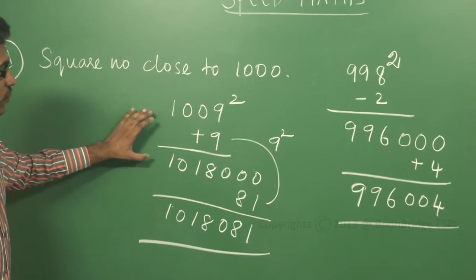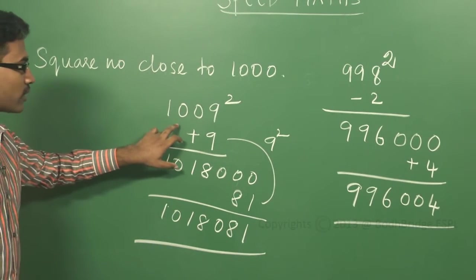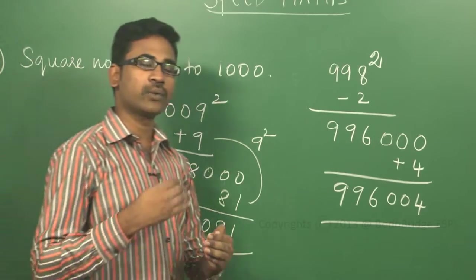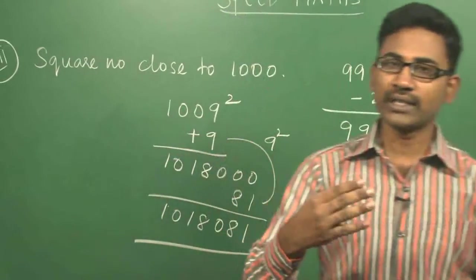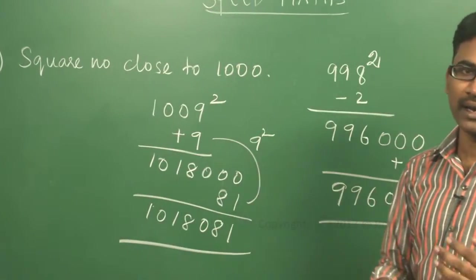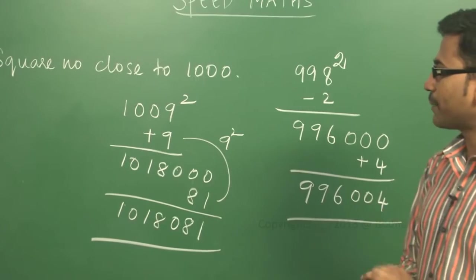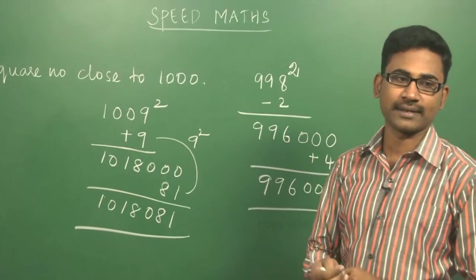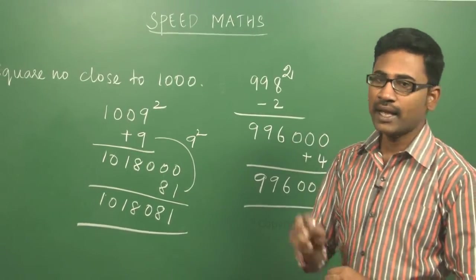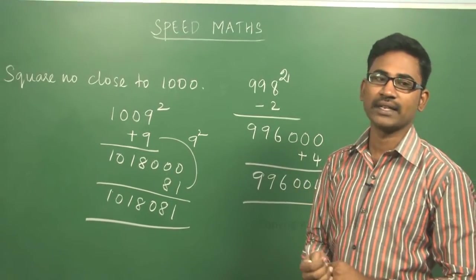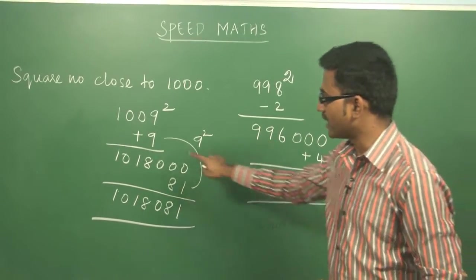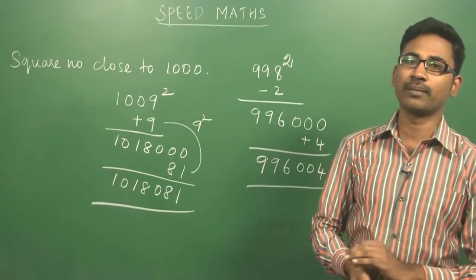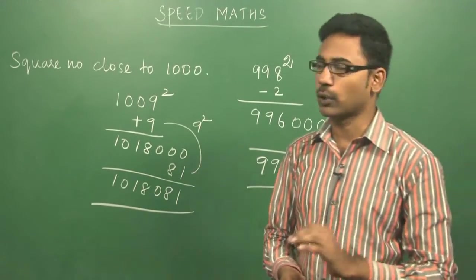This is the shortcut to find the square of numbers close to 1000. Check how much the number is more or less than 1000. Then add or subtract accordingly. Add three zeros at the end. Finally, square the difference and add it at the end. This is the full procedure to find square numbers close to 1000.